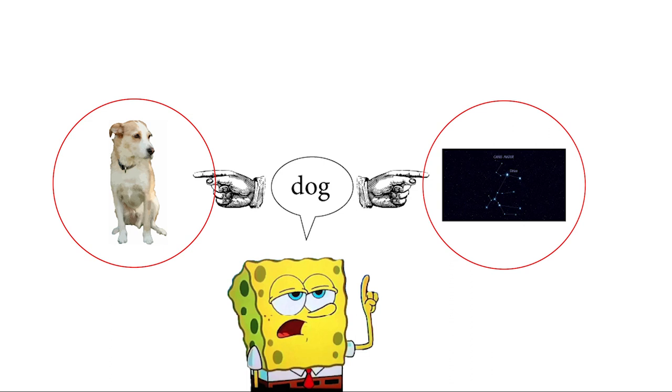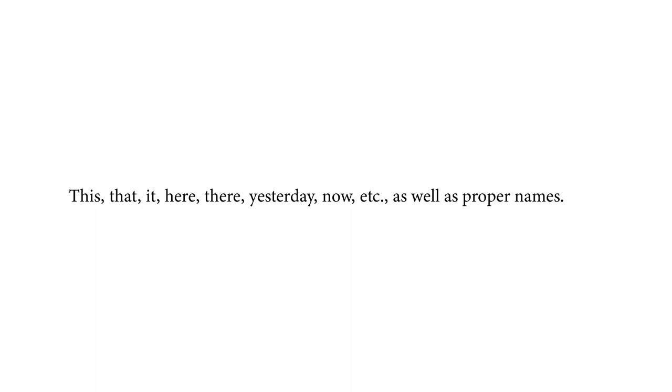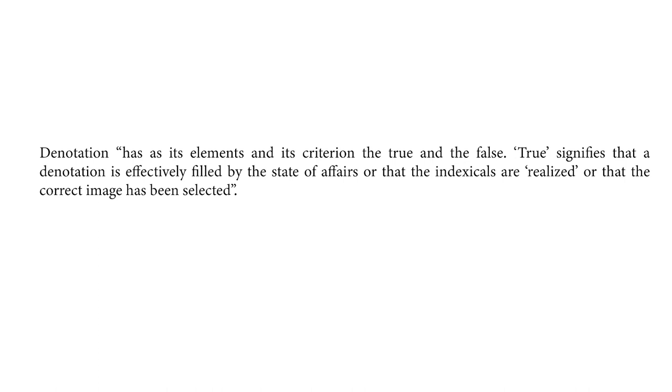In terms of formal logic, Deleuze says that denotation has as its element and criterion the true and the false. True signifies that a denotation is effectively filled by the state of affairs, or that the indexicals, the words that we mentioned before, are realized or that the correct image has been selected.